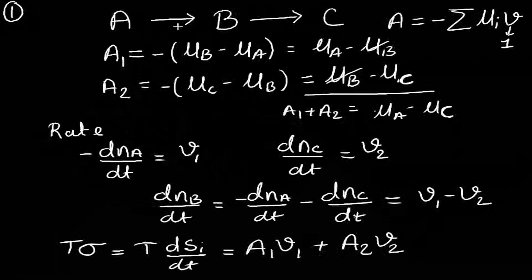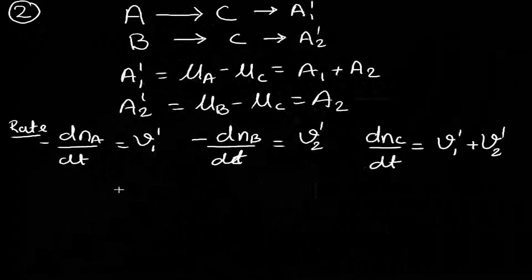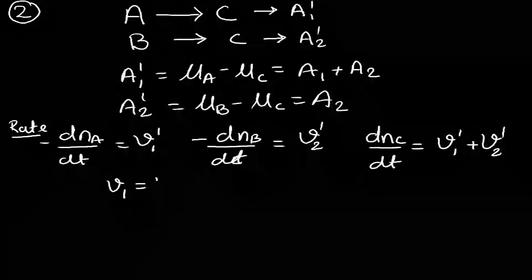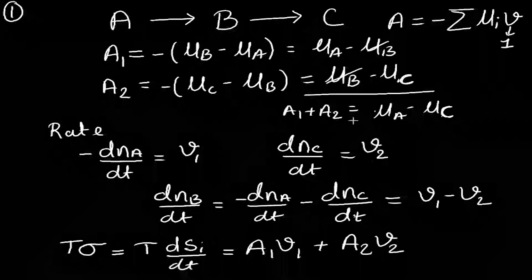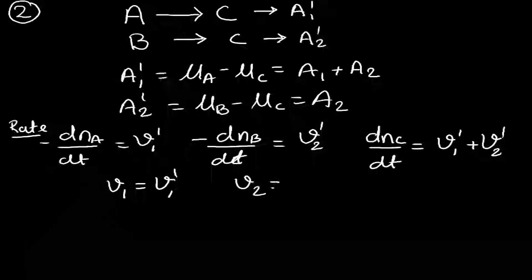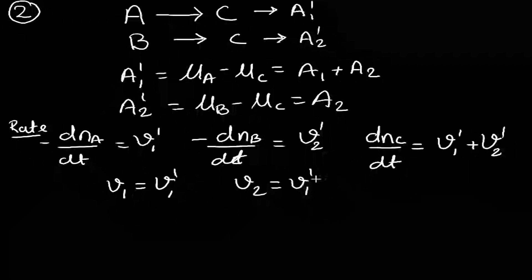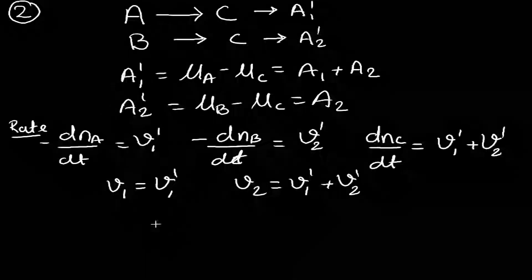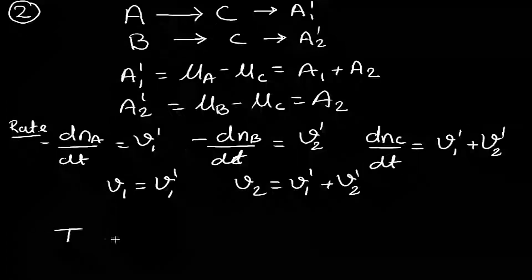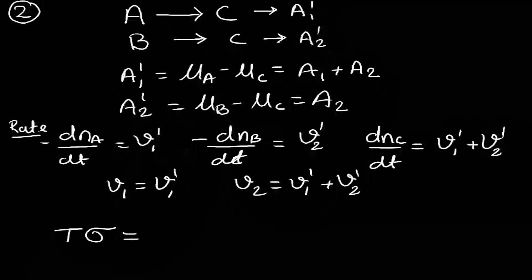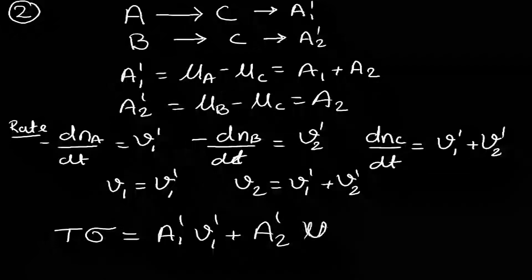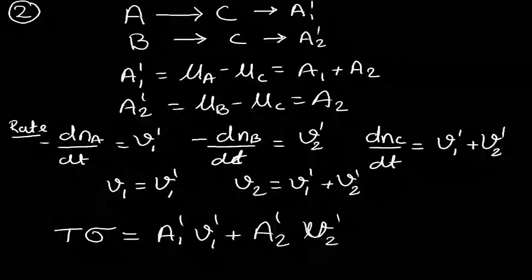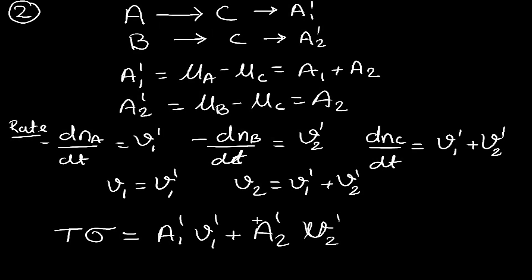Comparing these rates with those from Case 1: μ1 = μ1' (since dNA/dt = μ1) and μ2 = μ1' + μ2'. The entropy production for the second case is: tσ = A1'μ1' + A2'μ2'.